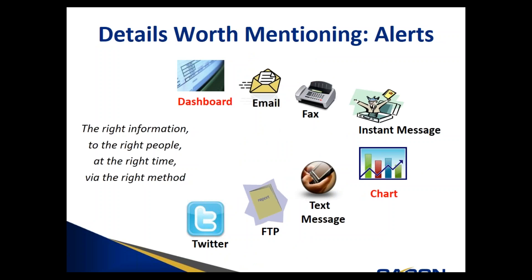Here are some details worth mentioning. Alerts are available in a variety of different formats. A dashboard alert is basically an alert that gives you a visual key performance indicator for your business. Email alerts are a popular method of delivering alerts in either plain text or HTML formats. Instant messaging is a method of receiving alerts via your Google Talk or Yahoo Messenger account. Charts and graphs are a popular visual way to receive graphical information about your company. Text messages are a widely used communication tool so you can receive SMS alerts in the field. And lastly, Sage Alerts and Workflow supports social media, so you can receive a tweet message via Twitter.